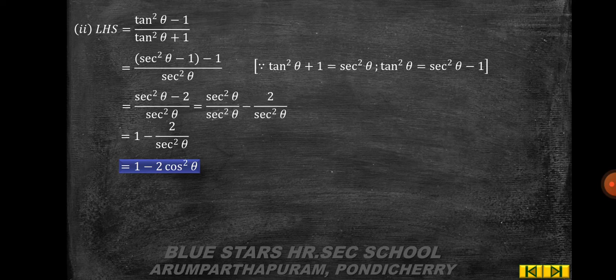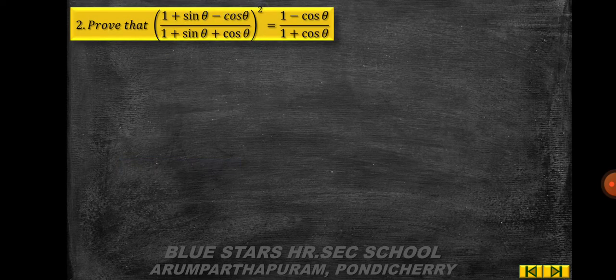This equals 1 − 2cos²θ, which is the right-hand side.